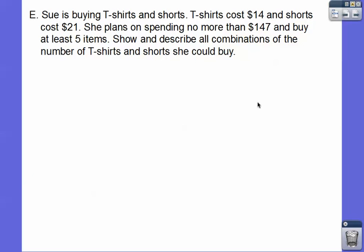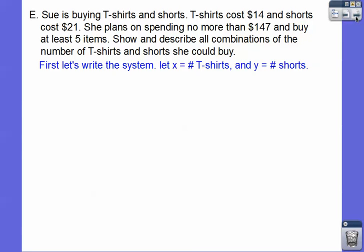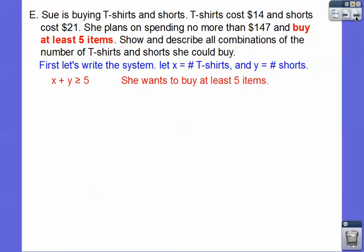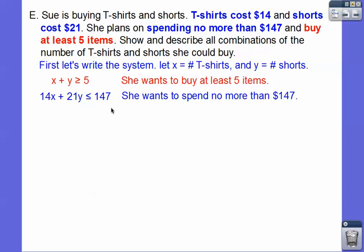Let's try another one. Sue is buying t-shirts and shorts. T-shirts cost $14, and shorts cost $21. She plans on spending no more than $147, and buys at least 5 items. Show and describe all combinations of the number of t-shirts and shorts. Here we're going to be using inequalities. She plans to spend no more than $147, so she can't go over, so this is going to be less than or equal to. She's going to buy at least 5 items, so that's going to be greater than or equal to. Let X be the t-shirts and Y be the shorts. X plus Y greater than or equal to 5, and no more than, less than or equal to, 147.